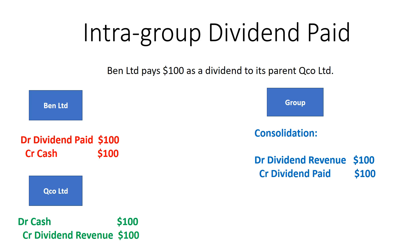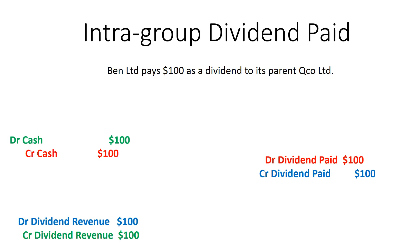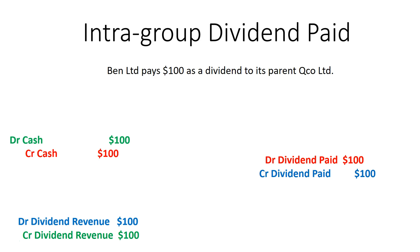To illustrate this more clearly: when we consolidate, we add up all transactions between individual entities plus our consolidation adjusting entries. We wanted to eliminate any impact of this transaction on the group financial statements. When you aggregate all transactions, the debit and credit cash offset each other; debit and credit dividend revenue offset each other; and debit and credit dividend paid by $100 offset each other. By doing these consolidation entries, we ensure there is no net impact on the group's financial statements.